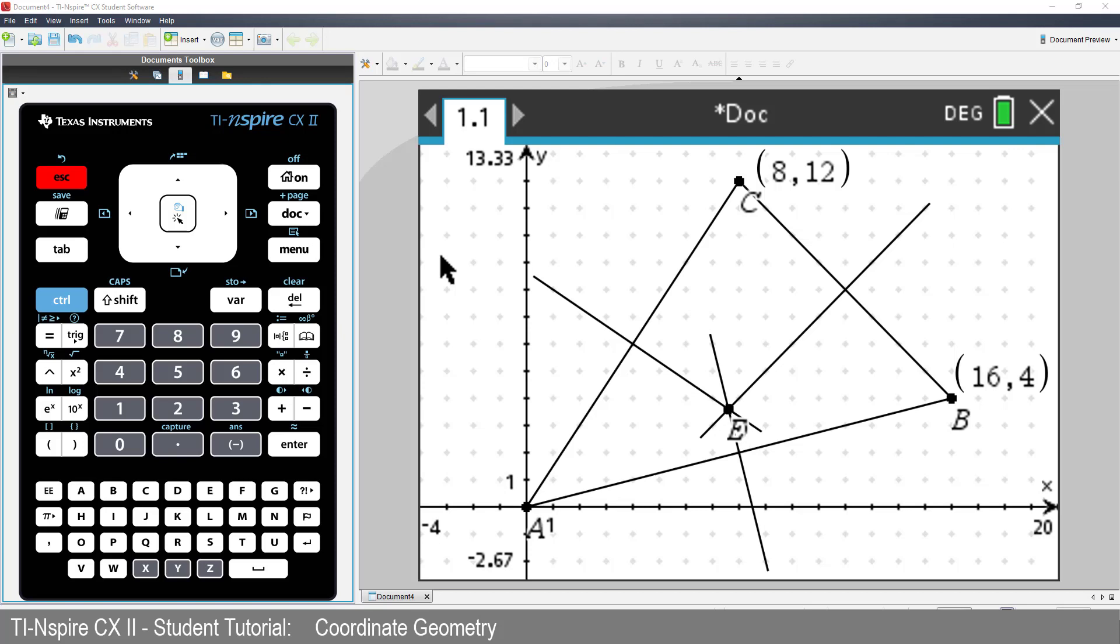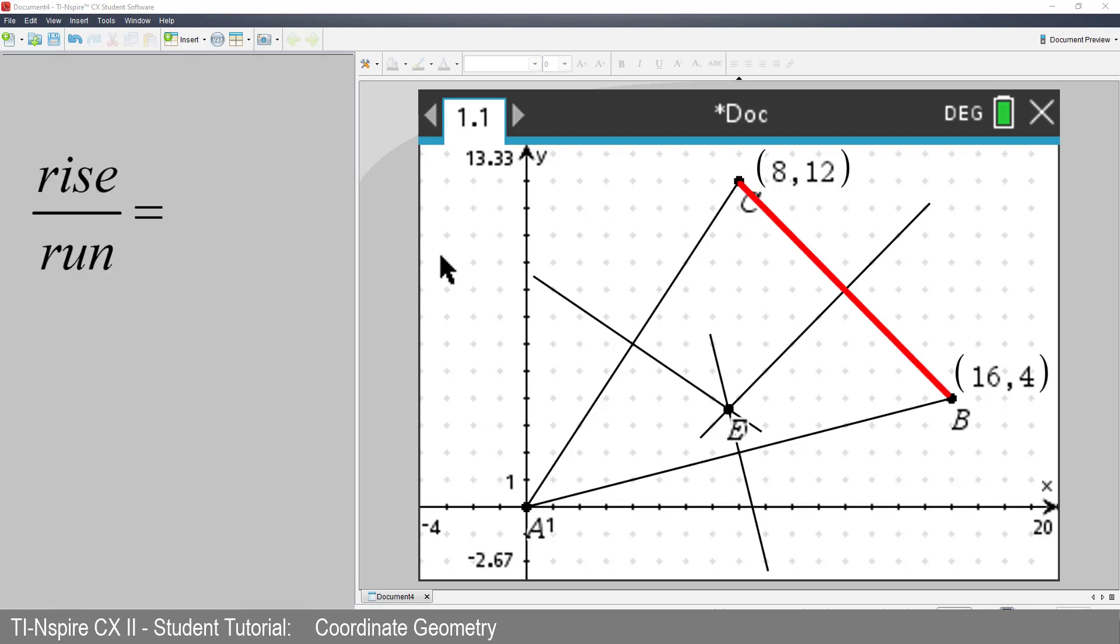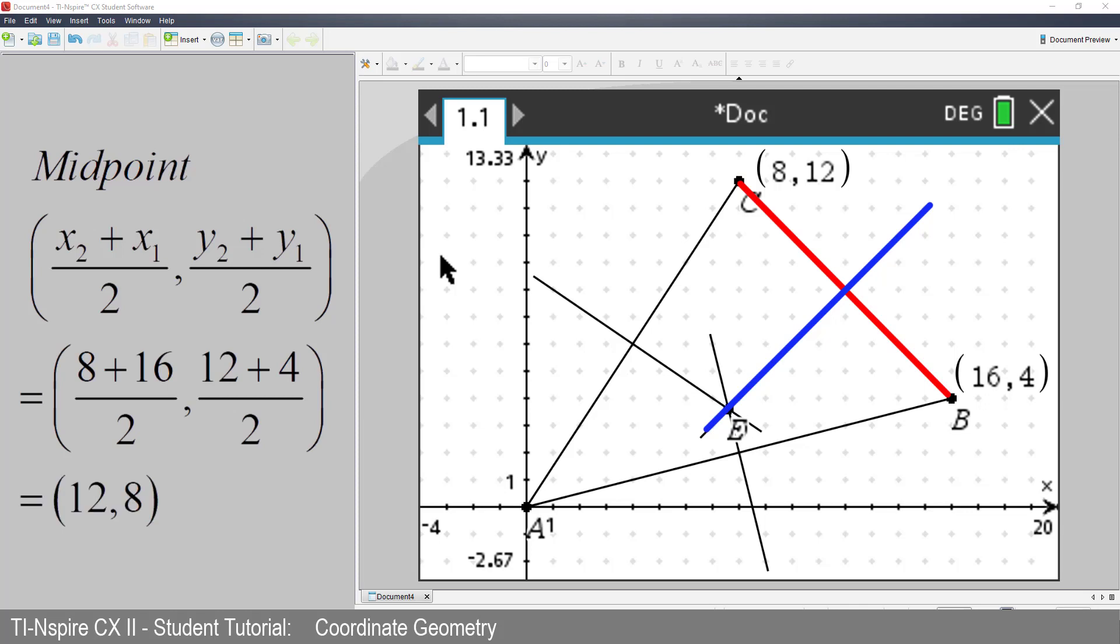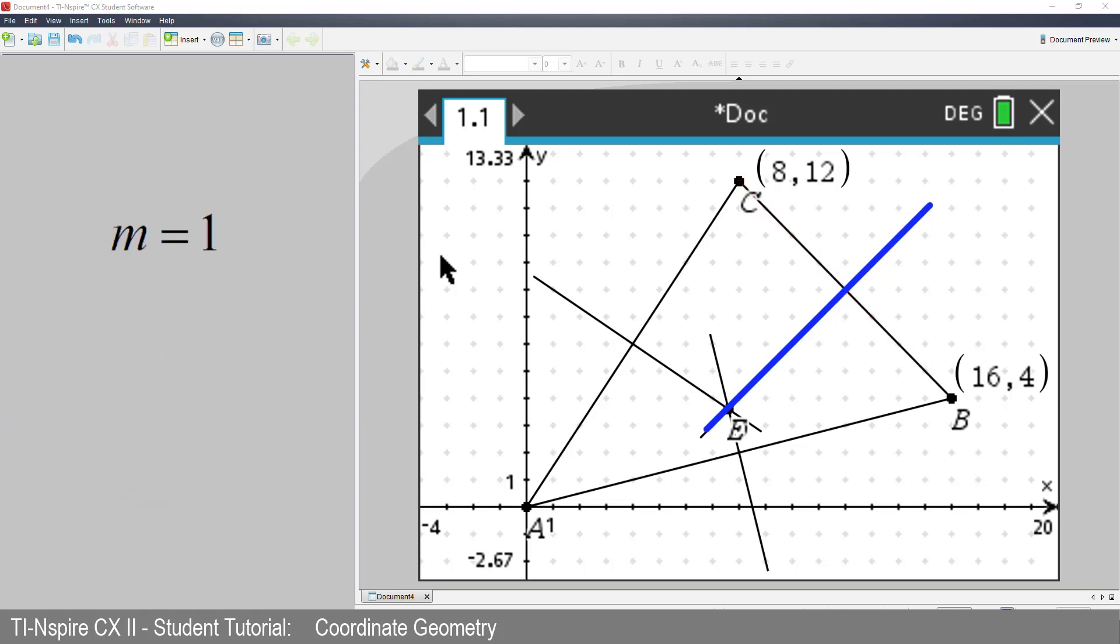We can check to see if D and E are the same using algebra. We could calculate the gradient of each side of the triangle, use this to work out the gradient of the perpendicular line, locate midpoints, and therefore work out the equation to each perpendicular bisector. However...